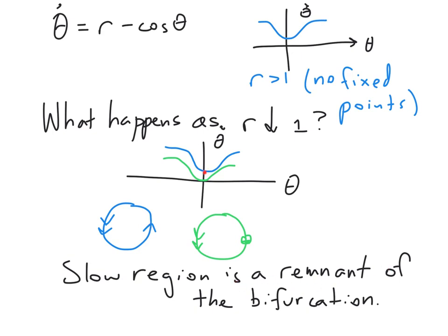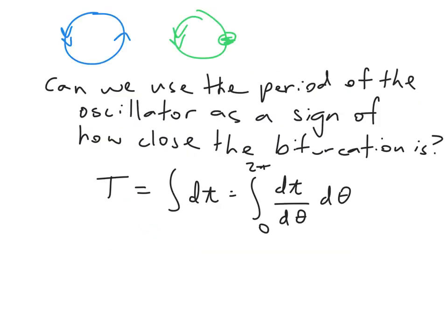You can imagine that the closer we are to the bifurcation, the slower that's going to go. And the further we are, the faster we're going to move through this zone. That's something we're going to try to quantify. This leads to the question, can we use the period of the oscillator as a sign of how close we are to the bifurcation?